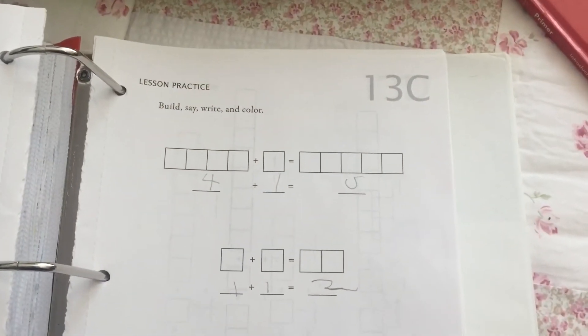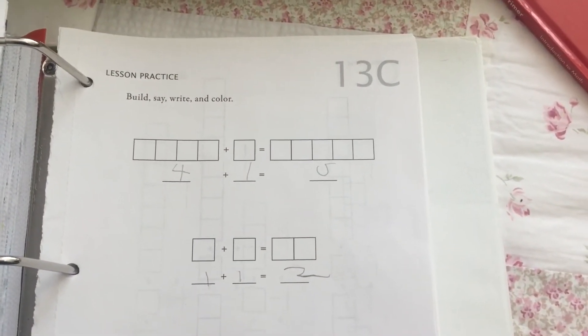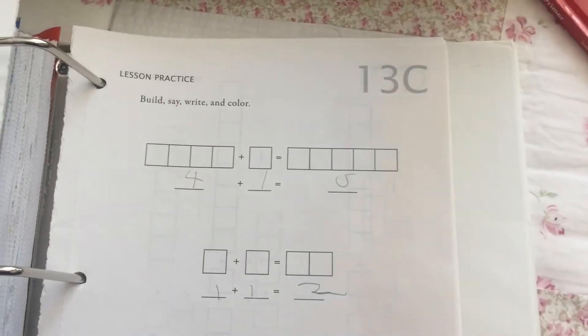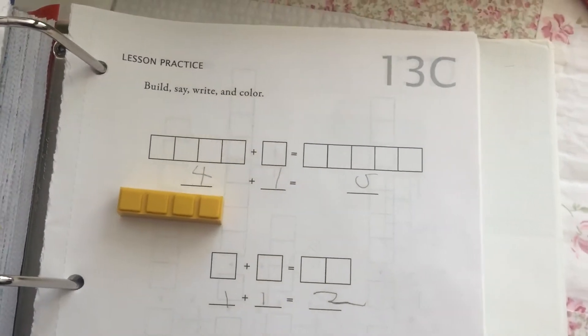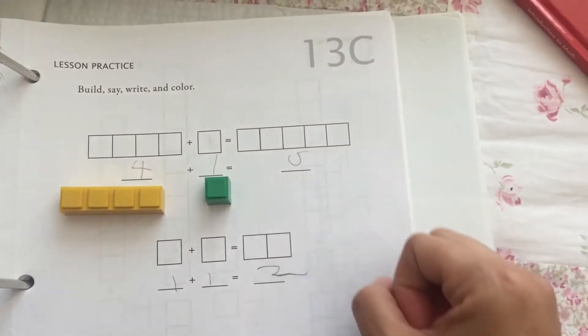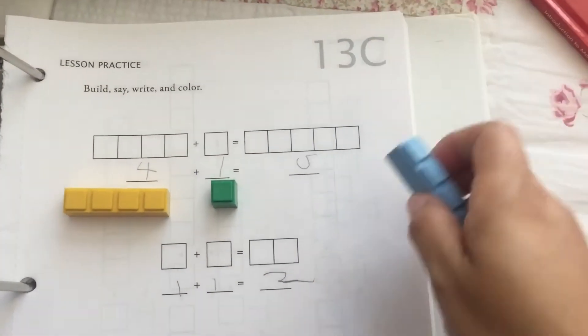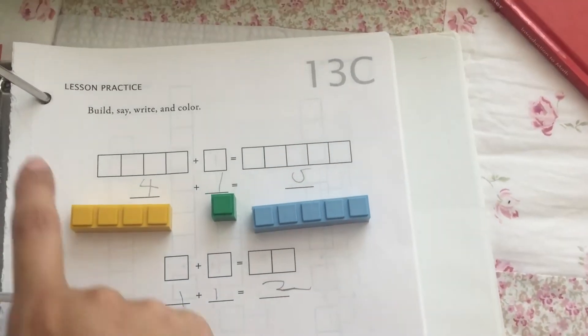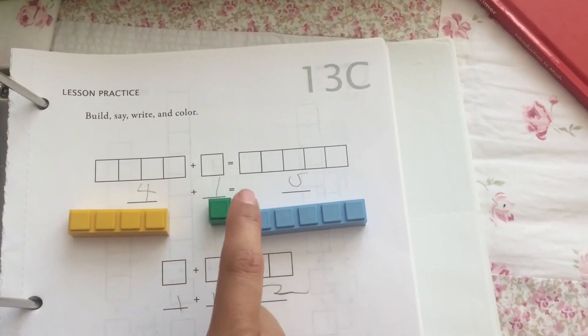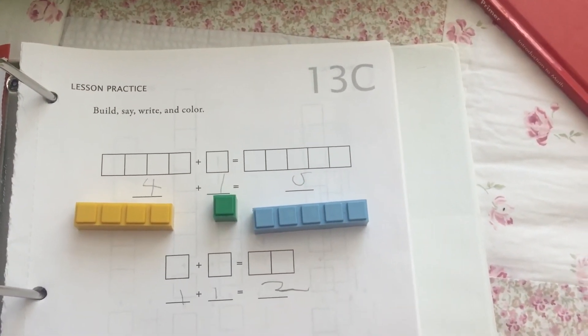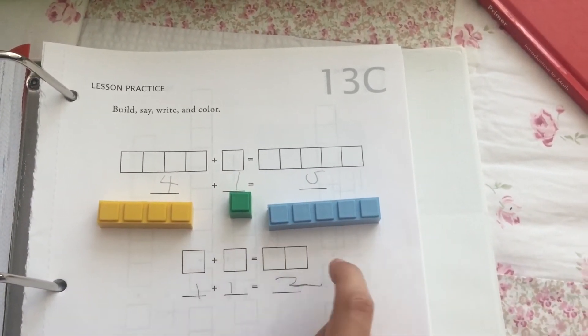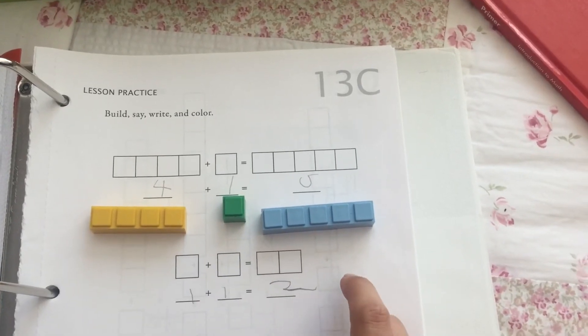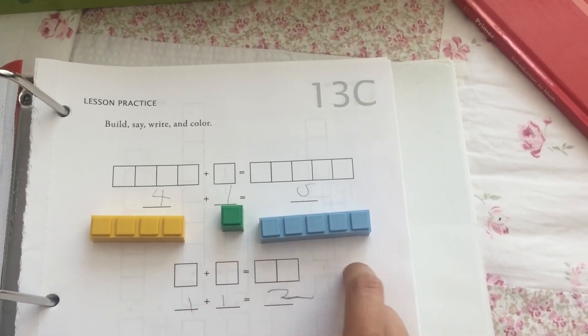This is an example of how they would do a math problem. They would get their four blocks, the unit, and then the answer. So build, say, write, and color. My son didn't color this page but you build with the blocks, you say the numbers out loud, and you write them. Four plus one equals five.